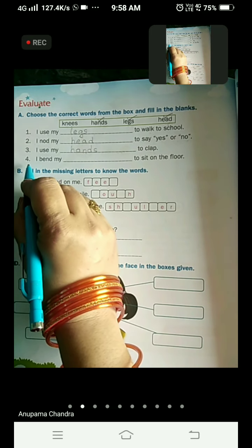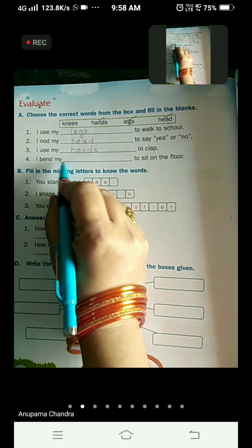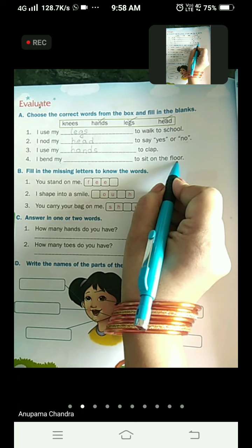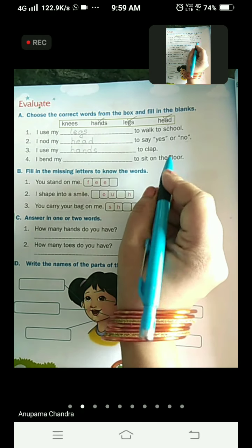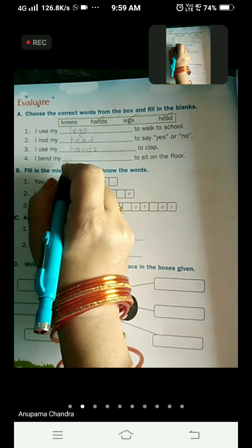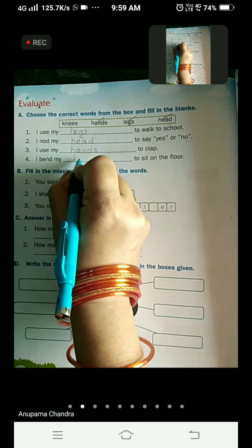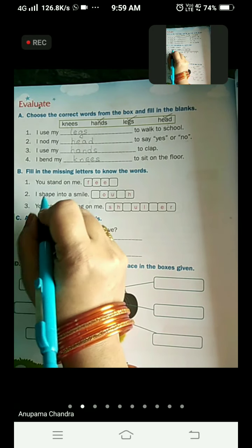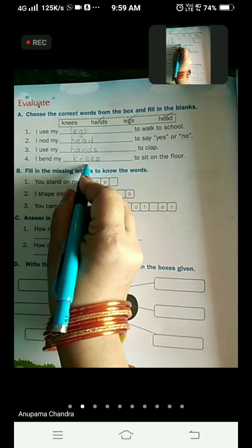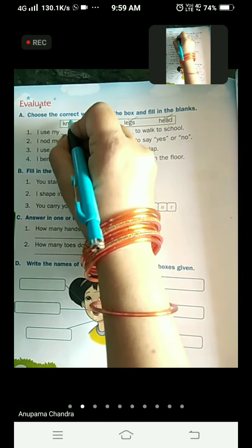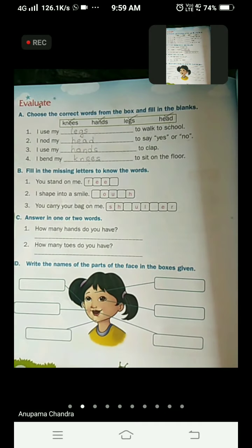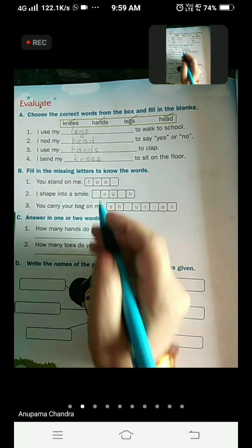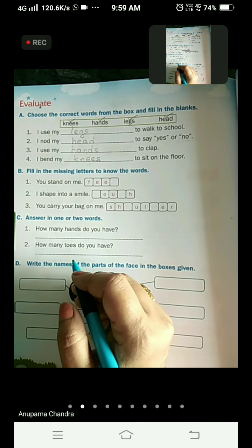Now come to the fourth one. I bend my dash to sit on the floor. What do we bend while we want to sit on the floor? That is our knees. So we are going to write the same in the blank. I bend my knees to sit on the floor. And tick over there. So hereby we complete all the four blanks.